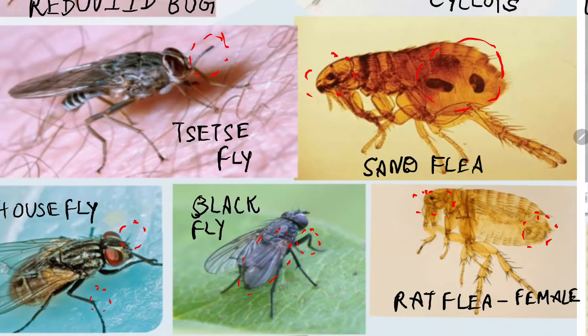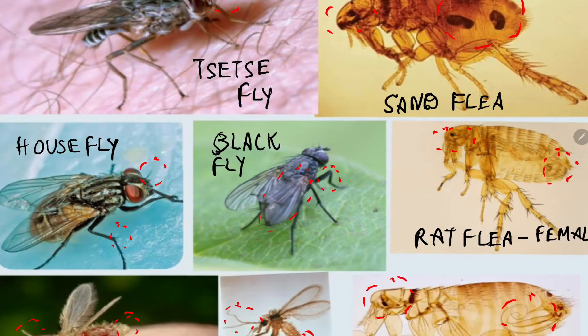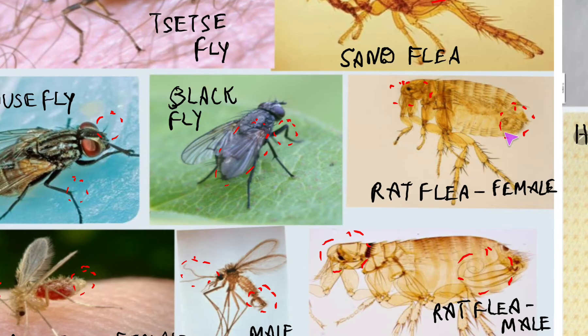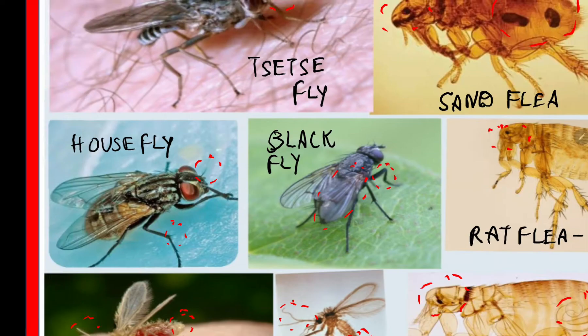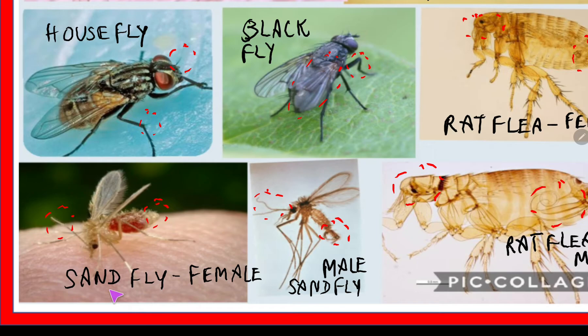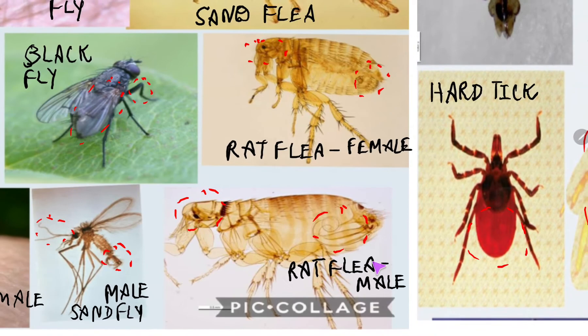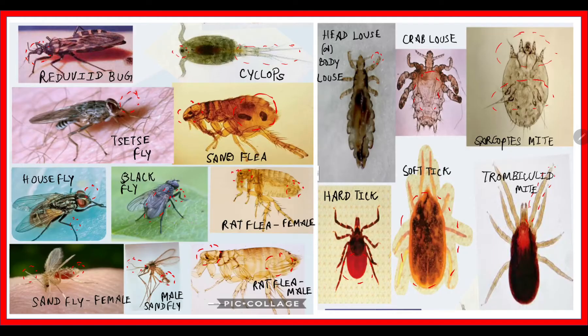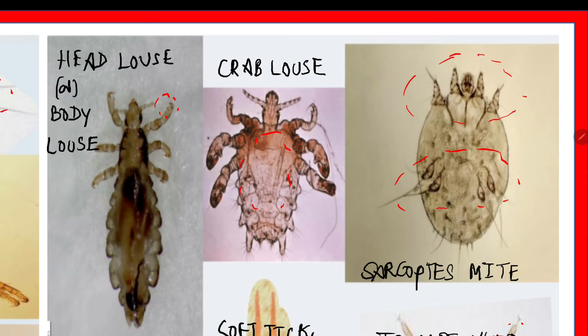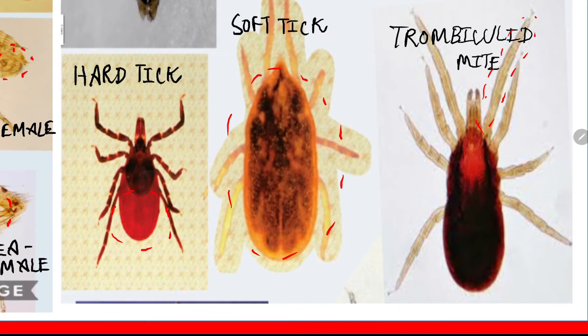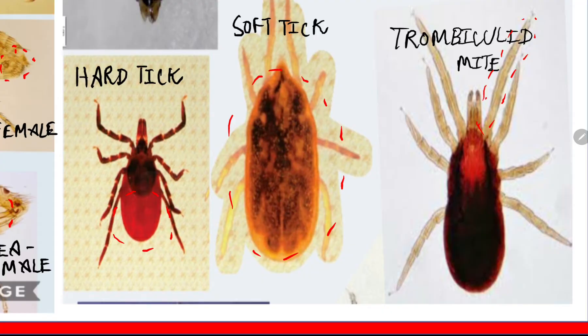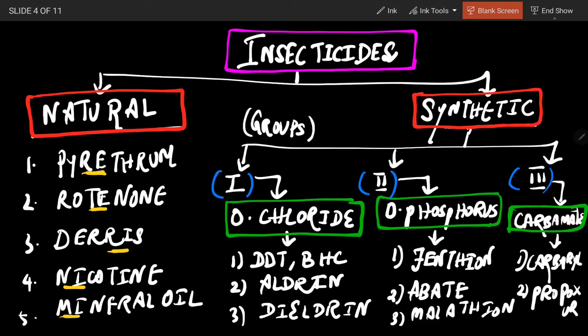The Reduviid Bug, Cyclops, Tsetse Fly, Sand Flea, House Fly, Black Fly (Female), and Rat Flea. In the lower corner, this is a Sand Fly — Male and Female Sand Fly. And here is the Head Louse or Body Louse, Crab Louse, Sarcoptes Mite, Hard Tick, Soft Tick, and Trombiculid Mite.